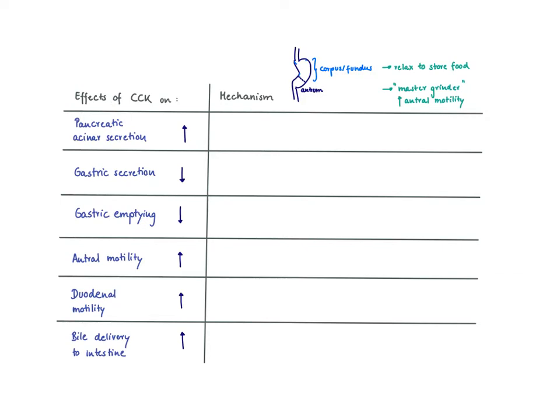CCK is the master regulator of digestion. First of all, CCK needs to provide the workers of digestion. It needs to provide the enzymes. So it stimulates the pancreatic acinar cells to release all the digestive enzymes.